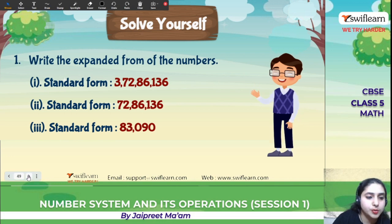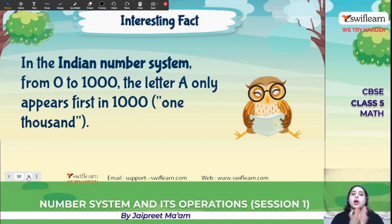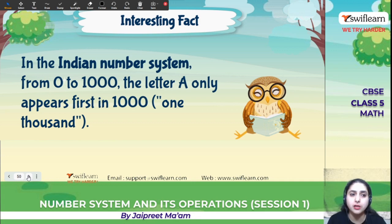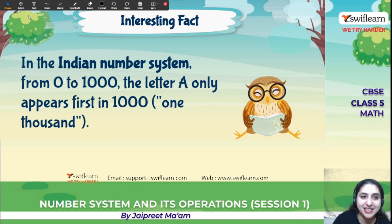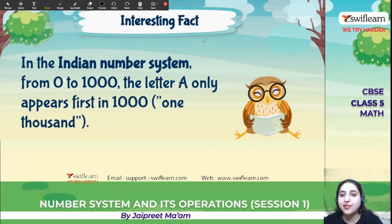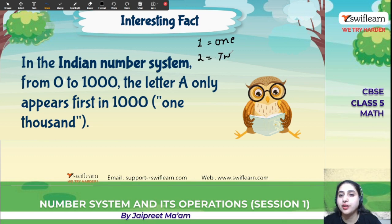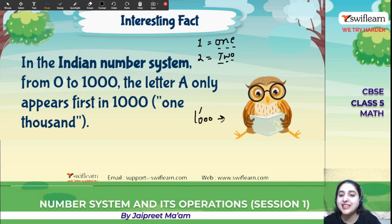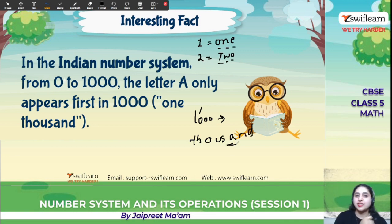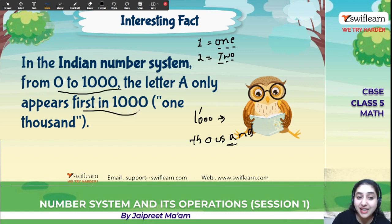Here is an interesting fact about the Indian number system: from zero to thousand, the letter 'A' only appears first in the word 'thousand'. If you write one, two, three... none of them contain the letter A. It first appears in 'thousand' — T-H-O-U-S-A-N-D.